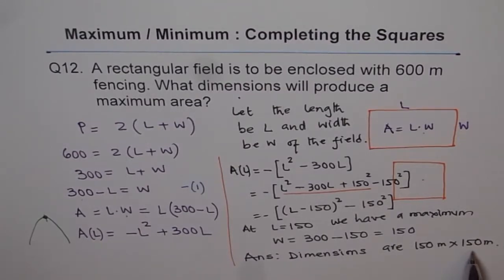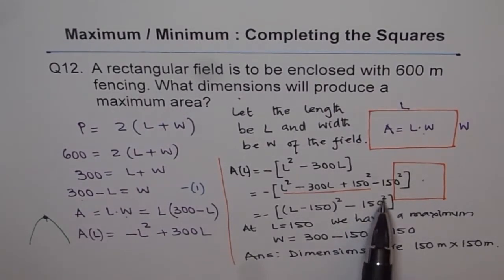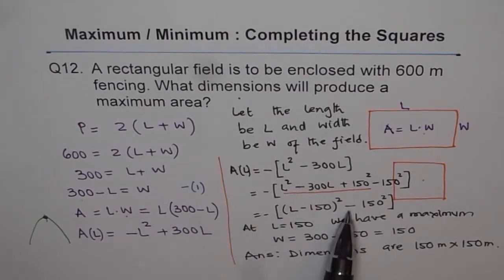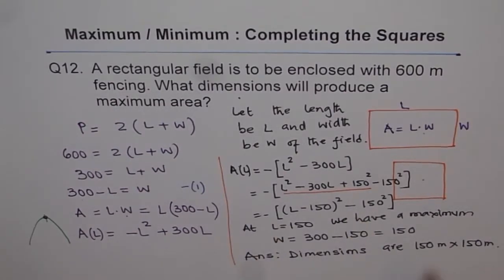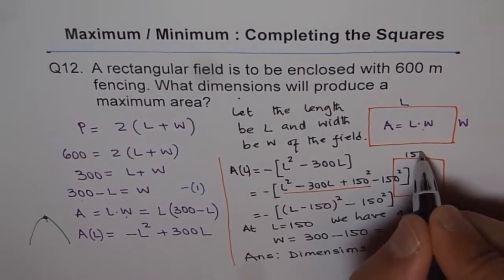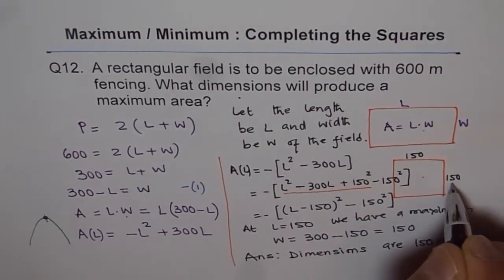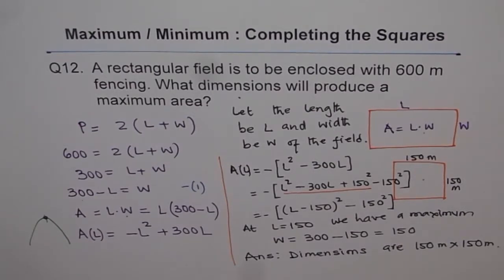So 150 meters is the length and 150 meters is the width, and that gives you the maximum area. When you open the bracket, the minus times minus makes it positive, so you get a positive area — don't be confused by the negative sign. The maximum area occurs at dimensions 150 by 150, making it more like a square. That is how such problems can be solved.